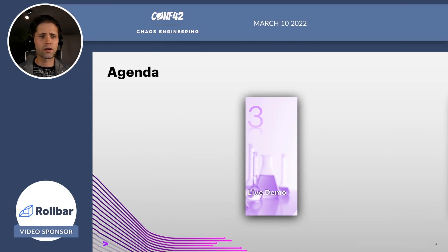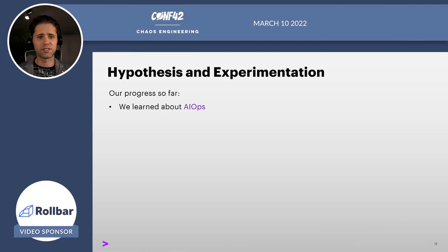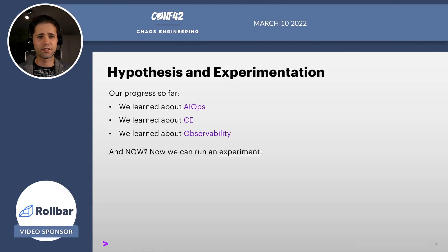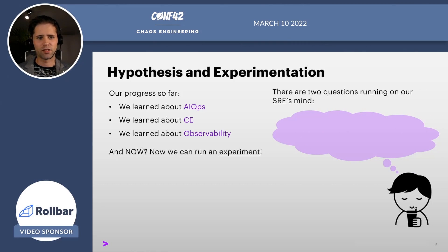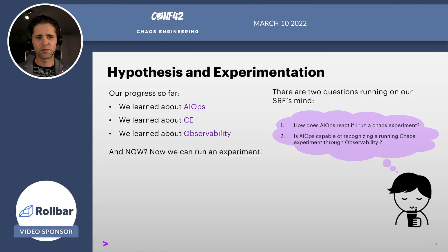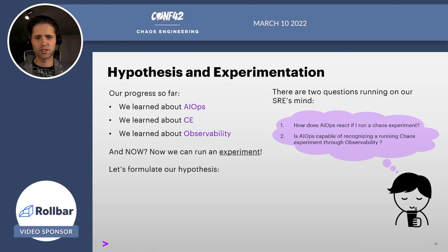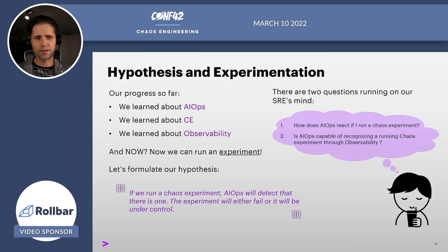Now we can run a chaos experiment. There are two questions running on an SRE's mind. One: how does AIOps react if I run a chaos experiment? Two: is AIOps capable of recognizing a running chaos experiment through observability? Now that we have all the necessary ingredients to formulate our hypothesis, which goes as follows — we assume that if we run a chaos experiment, AIOps will be able to detect that there is one. The experiment will then either fail or be under control.